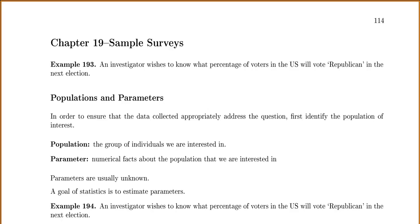Chapter 19 is about sample surveys and some of the better ways we can design and complete our surveys. For example, 19.3: let's say an investigator wishes to know what percentage of voters in the U.S. will vote Republican in the next election. This is a type of question we might want to answer.